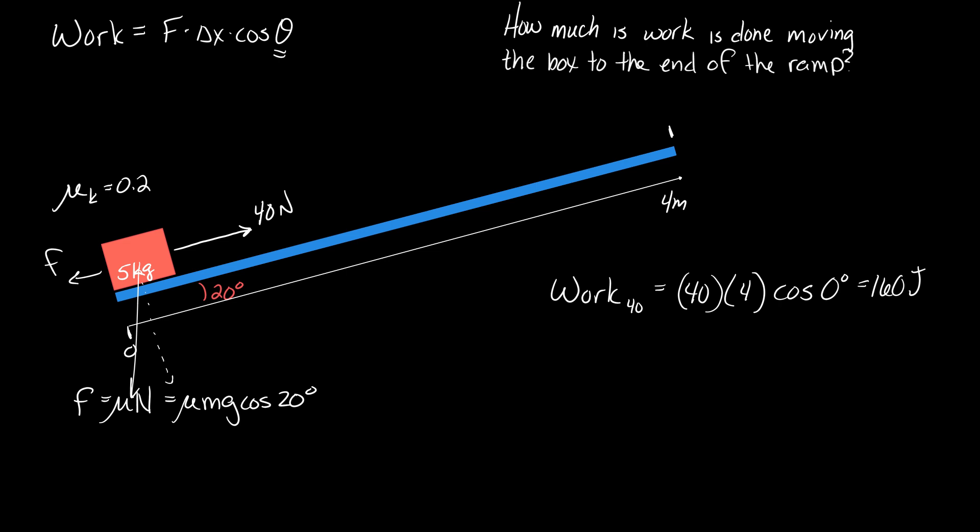If I want the normal force, I need the part of the weight that's into the ramp to find the normal force. That's mg cosine, the angle of the ramp. This all comes out to be 9 point something, if I recall.